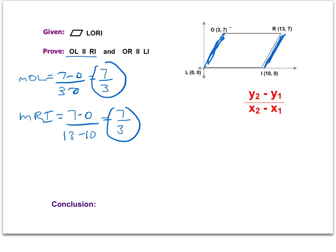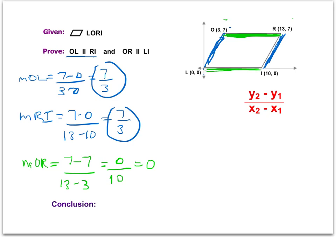We're not done, because we have to do the same thing for the other set of opposite sides and calculate those slopes. I'm going to find the slope of OR. The slope of OR equals — taking point R first — 7 minus 7 for the y values over 13 minus 3 for the x values. We get 0 over 10, and 0 divided by anything is just 0. That makes sense because this looks like a horizontal line, and the slope of any horizontal line is 0.